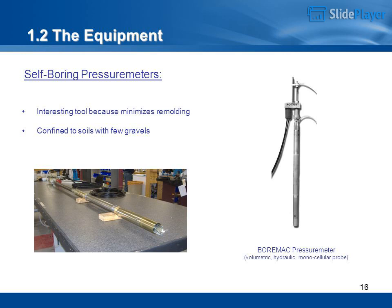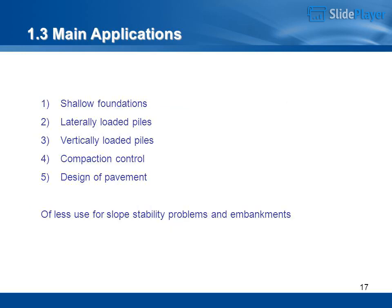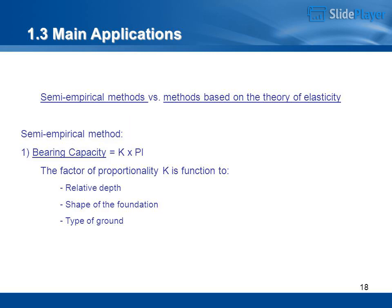Self-boring pressuremeters are an interesting tool because they minimize remolding, but are confined to soils with few gravels. The Bormac pressuremeter is volumetric, hydraulic, monocellular probe. Main applications include: shallow foundations, laterally loaded piles, vertically loaded piles, compaction control, design of pavement; they are of less use for slope stability problems and embankments.